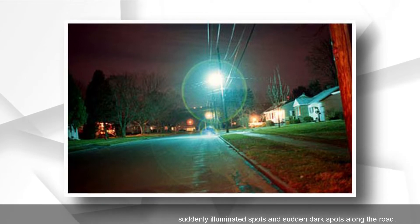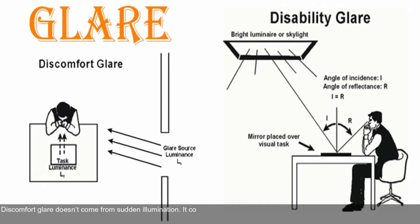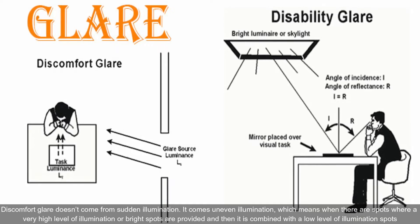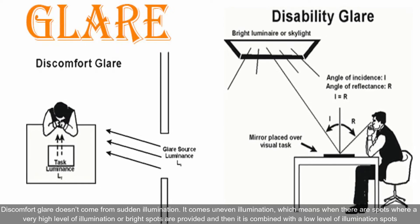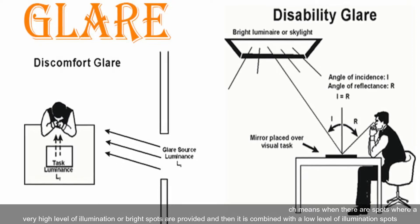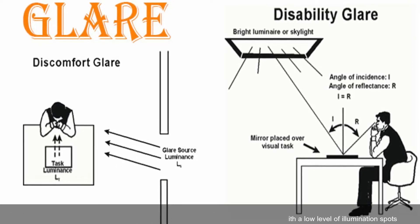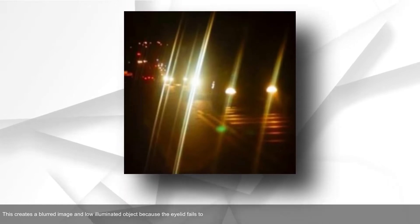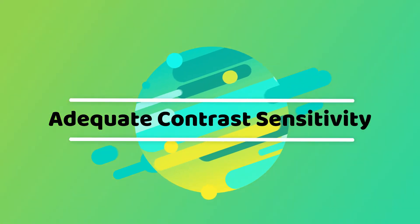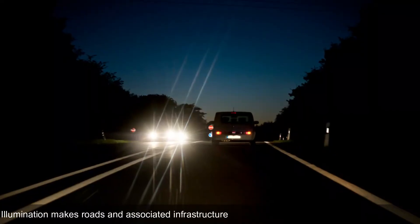Discomfort glare does not come from sudden illumination — it comes from uneven illumination. When there are spots with a very high level of illumination combined with spots of low illumination, this creates a blurred image of low-illuminated objects, because the eyelid fails to adjust to a lower-illuminated object immediately after seeing a higher-illuminated object.